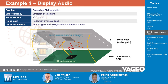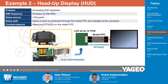Another example would be with the head-up display. Here also it's about EMI regulation. The LCD panel is the perpetrator of the noise problem, happening at 200 MHz. The current is being conducted through the shield FPC, and the noise is then radiated to the connector. In order to solve that, you just put the flex suppressor on the shield FPC. In the first example, we put it on the origin of the noise. Here, it would be much more complicated to cover the whole back of the LCD panel — instead, you cut the noise path on the shield FPC so the LCD driver is protected.